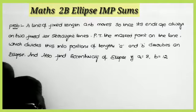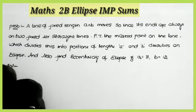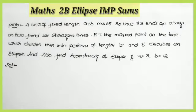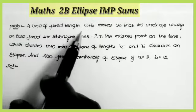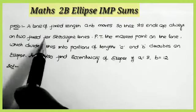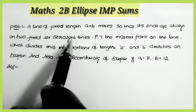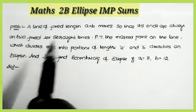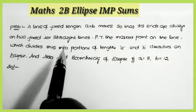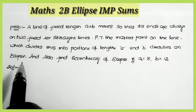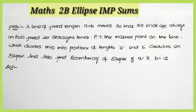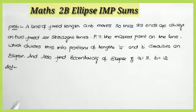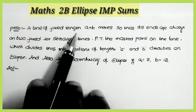Good morning students, welcome back to Share the Math channel. In this video I am presenting the most important past questions from the topic ellipse, math to B. The first problem: a line of fixed length a plus b moves so that its ends are always on two fixed perpendicular straight lines. We must show that the marked point on the line which divides it into portions of lengths a and b describes an ellipse, and also find the eccentricity if a equals 8 and b equals 12.